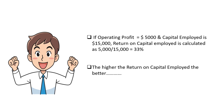As an example, if operating profit is $5,000 and capital employed is $15,000, the Return on Capital Employed is calculated as $5,000 divided by $15,000, giving us a percentage of 33%.